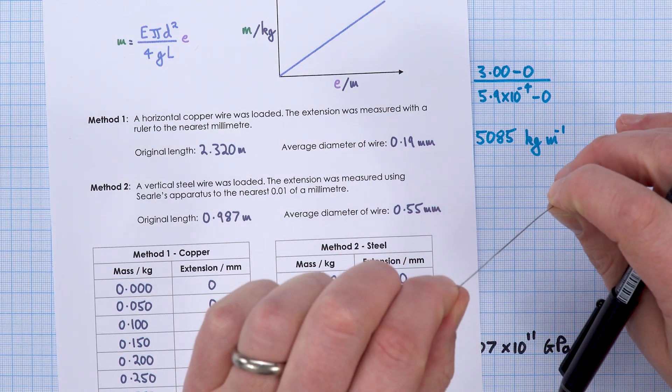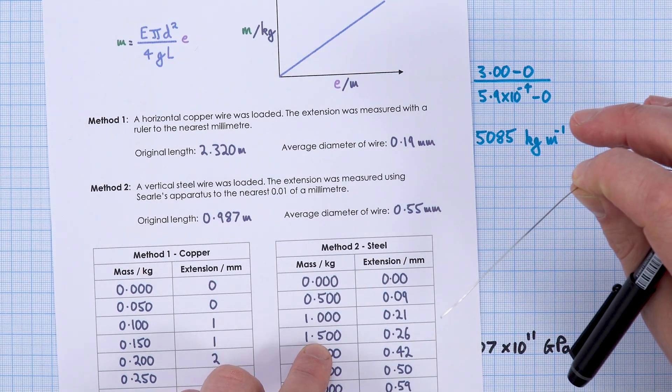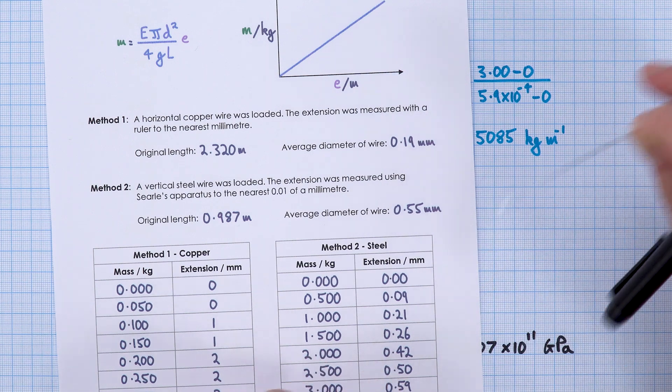As a thicker piece of wire, we added much heavier masses to it, but the extension was quite small, though we could still measure that.